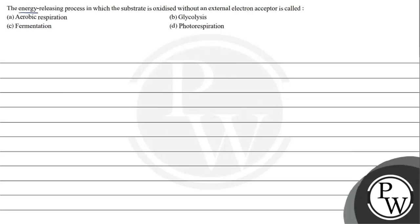The question says: the energy releasing process in which the substrate is oxidized without an external electron acceptor is called? This is an energy releasing process in which the substrate is oxidized itself without an external electron acceptor.